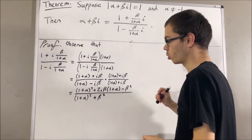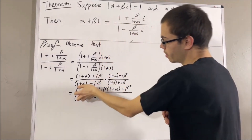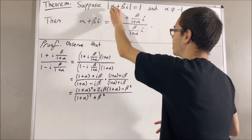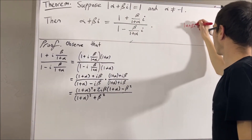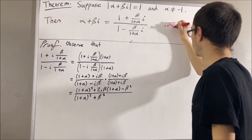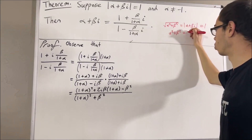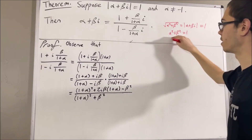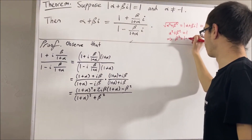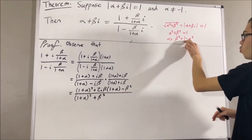Now, at this point, it may not be super clear how this is going to simplify down to alpha plus beta i. But, remember, this is not just going to simplify down to alpha plus beta i for any complex number. It's under the condition that the magnitude of our complex number is equal to 1. And, by definition of the magnitude of a complex number, this is just the square root of alpha squared plus beta squared. So, if we square both sides, we get alpha squared plus beta squared is equal to 1. So, we need to somehow apply this fact into our work. Notice, if we solve for beta squared, we get beta squared equals 1 minus alpha squared. And, so, what we're going to do is substitute the beta squareds with 1 minus alpha squared.